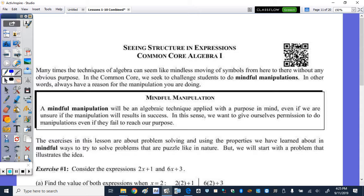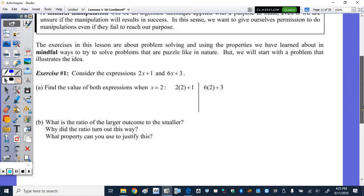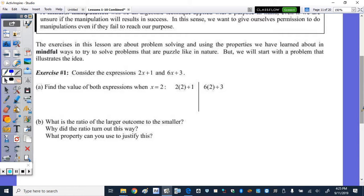But we will start with a problem that illustrates the idea. So in Exercise 1, it says, consider the expressions 2x plus 1 and 6x plus 3. Find the value of both when x is 2. So we're going to plug in the 2. Remember, this was 2x plus 1. So we plugged in the 2. 2 times 2 is 4. 4 plus 1 is 5.